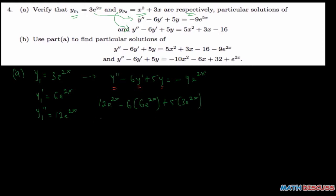Let's see what that gives us. It's going to be 12e to the power 2x minus 36e to the power 2x, and 5 times 3 is 15e to the power 2x. Then 12 plus 15 is 27, and 27 minus 36 is minus 9e to the power 2x.